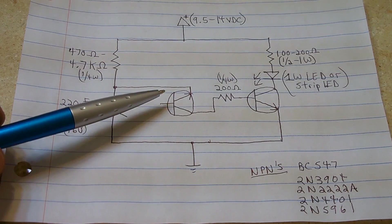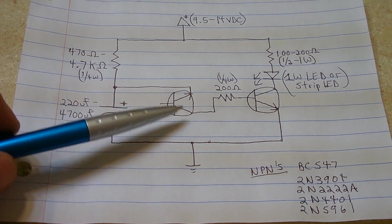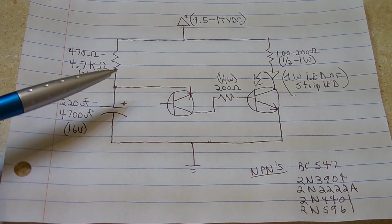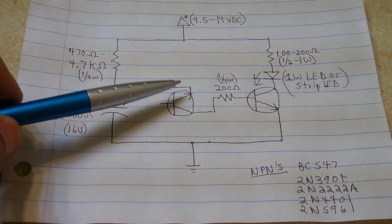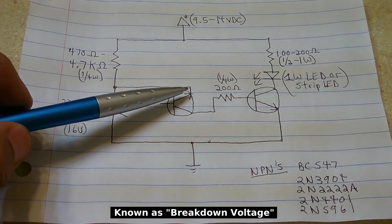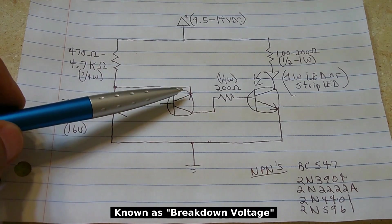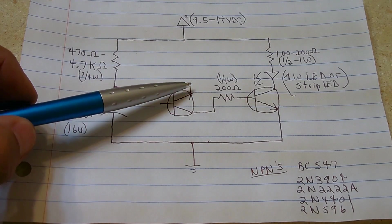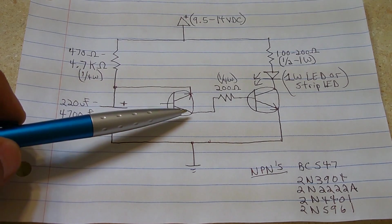The way this circuit works is the transistor is installed in reverse, and what happens when enough voltage is applied to the emitter, it's going to break down. Once it breaks down, the emitter is going to be able to conduct and allow current to flow backwards into the emitter and out the collector.